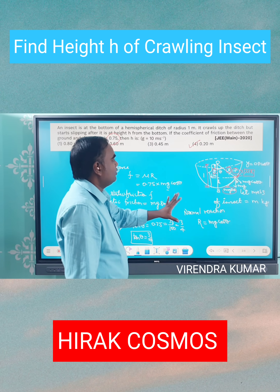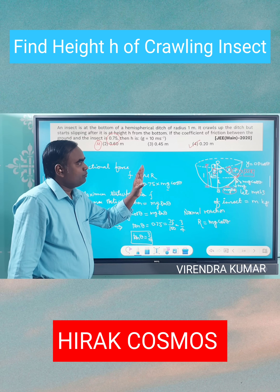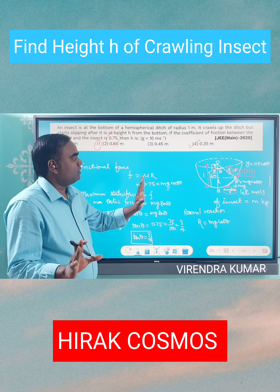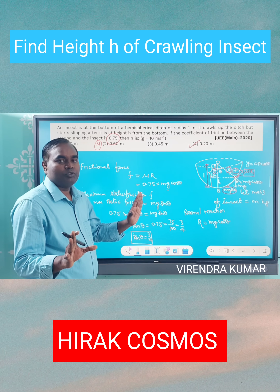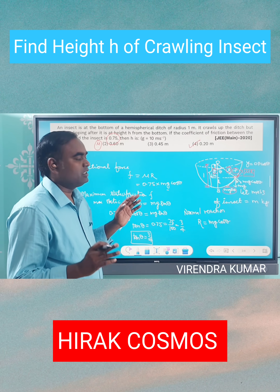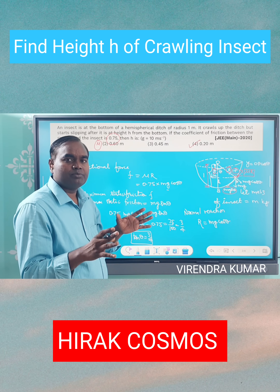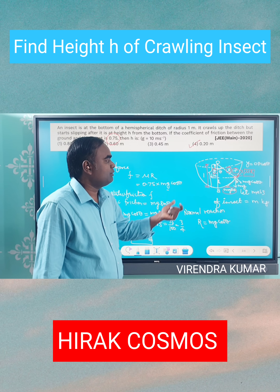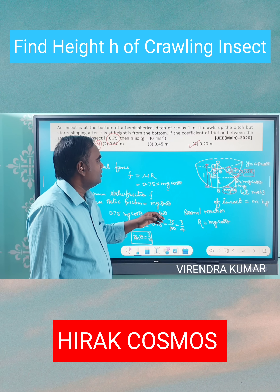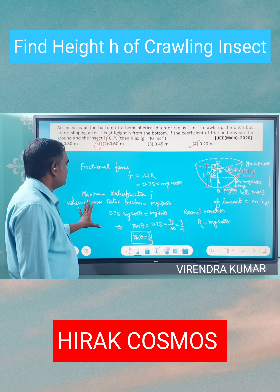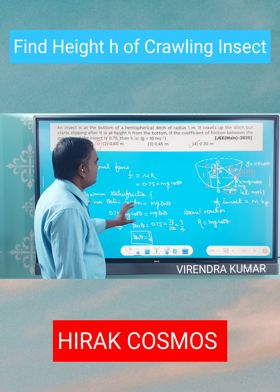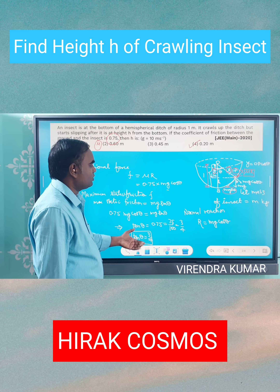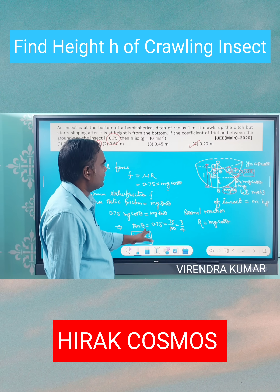When the insect reaches point P, it is in a static position; afterwards it starts falling down. At that point, the frictional force becomes less than the gravitational force mg sinθ. So in the static equilibrium position, mg sinθ equals the frictional force, from which we get tan θ equal to 3 by 4.